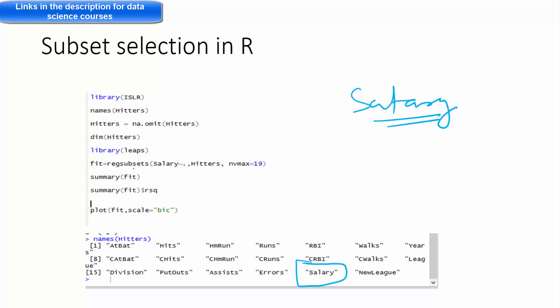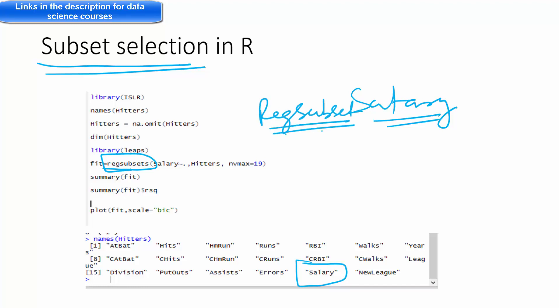We are going to use first subset selection, and we are going to use the function regsubsets which will do the subset selection for us. Then we will see the summary statistics, the R-squared values, and we will plot the BIC values — the Bayesian information criteria. We can also use the AIC information criteria. So this will help us in selecting the best model.